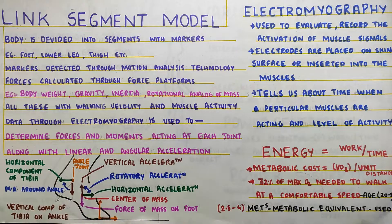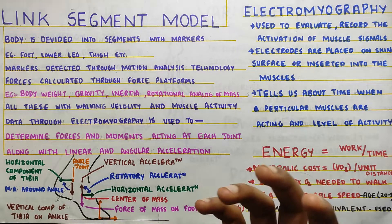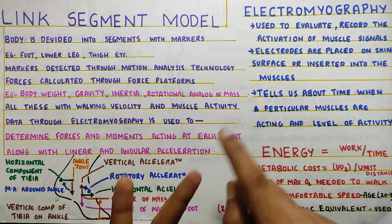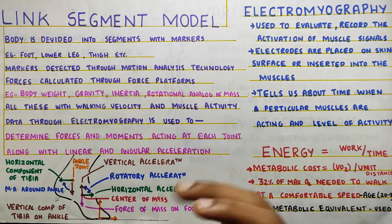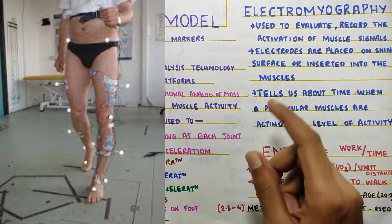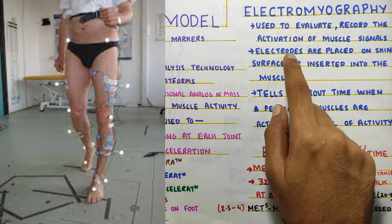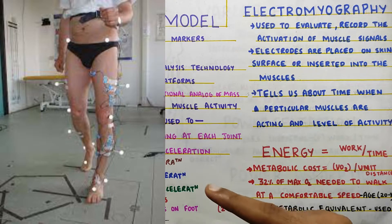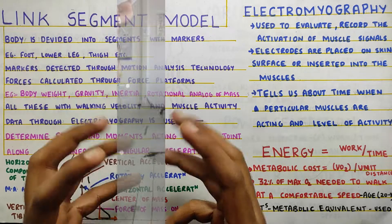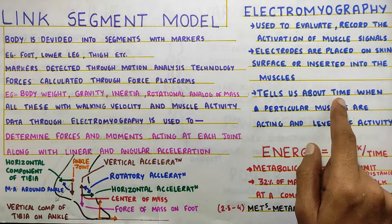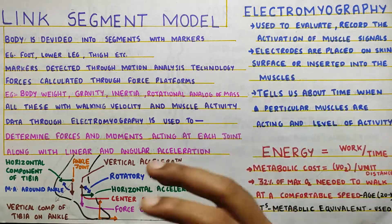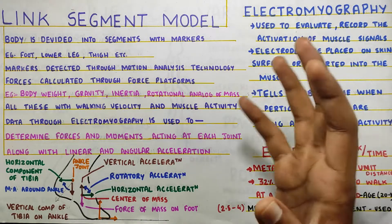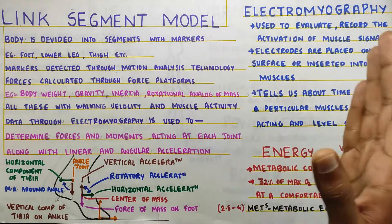We have now covered all the forces that can be measured during a gait cycle. The first measurement tool is the force plate, and the second is electromyography. Electromyography is used to evaluate, record, and read the activation of muscle signals. Electrodes are placed on the skin or inside the muscle through needles, and when the muscle contracts it tells us the time of contraction and which muscle is contracting at what activity. This helps us know the activation of muscles during different cycles of gait.